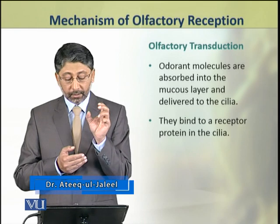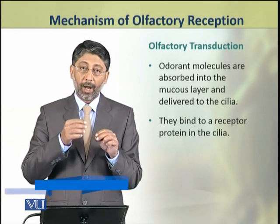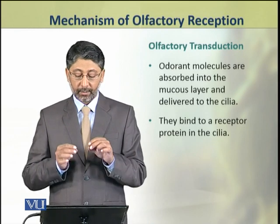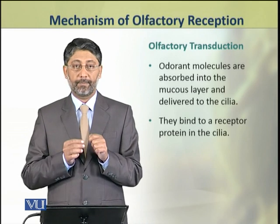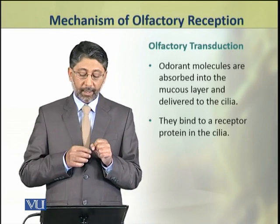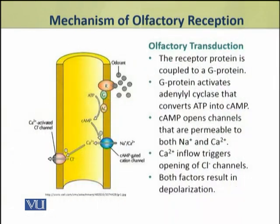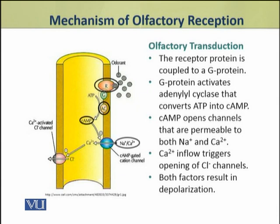These odorant molecules are absorbed into the mucus layer and then they are delivered to the cilia. In the cilia, they bind to a receptor protein. The receptor protein is coupled to a G protein. This G protein activates the enzyme adenyl cyclase, which converts ATP into cyclic AMP. The cyclic AMP opens ion channels that are permeable to both sodium and calcium.